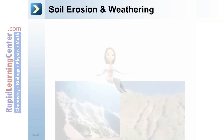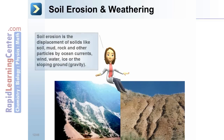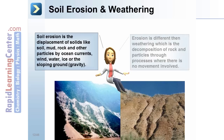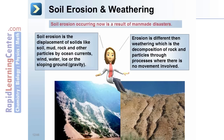Soil erosion is the displacement of solids like soil, mud, rock, and other particles by ocean currents, wind, water, ice, or the force of gravity on slopes. Erosion is different from weathering, which is the decomposition of rock and soil particles through processes where there is no movement involved. Soil erosion occurring now is largely a result of man-made disasters.